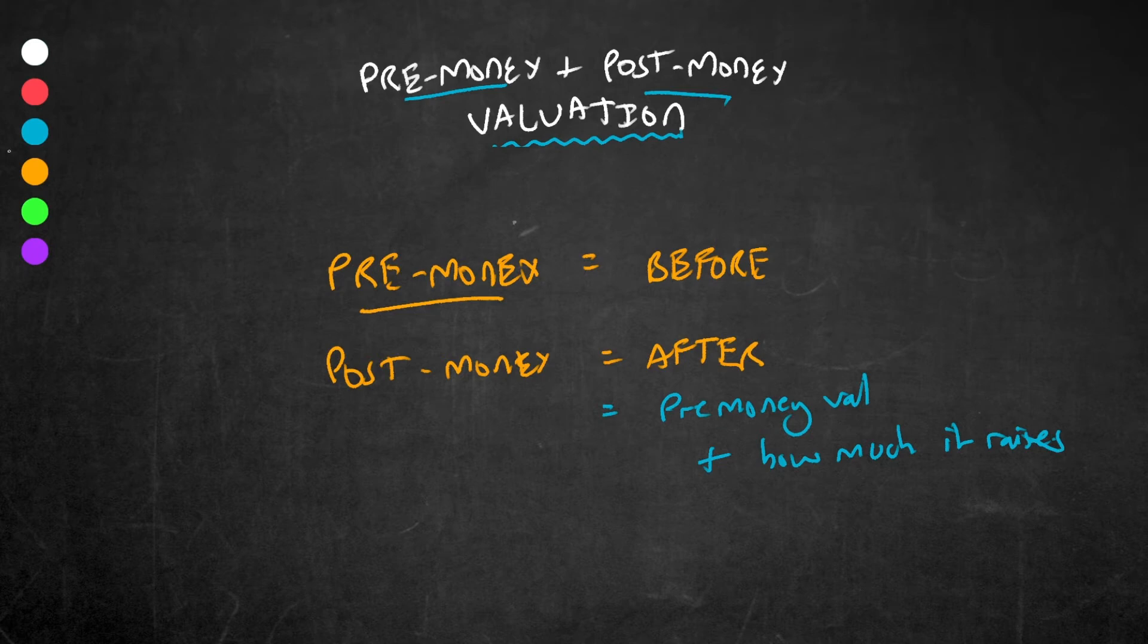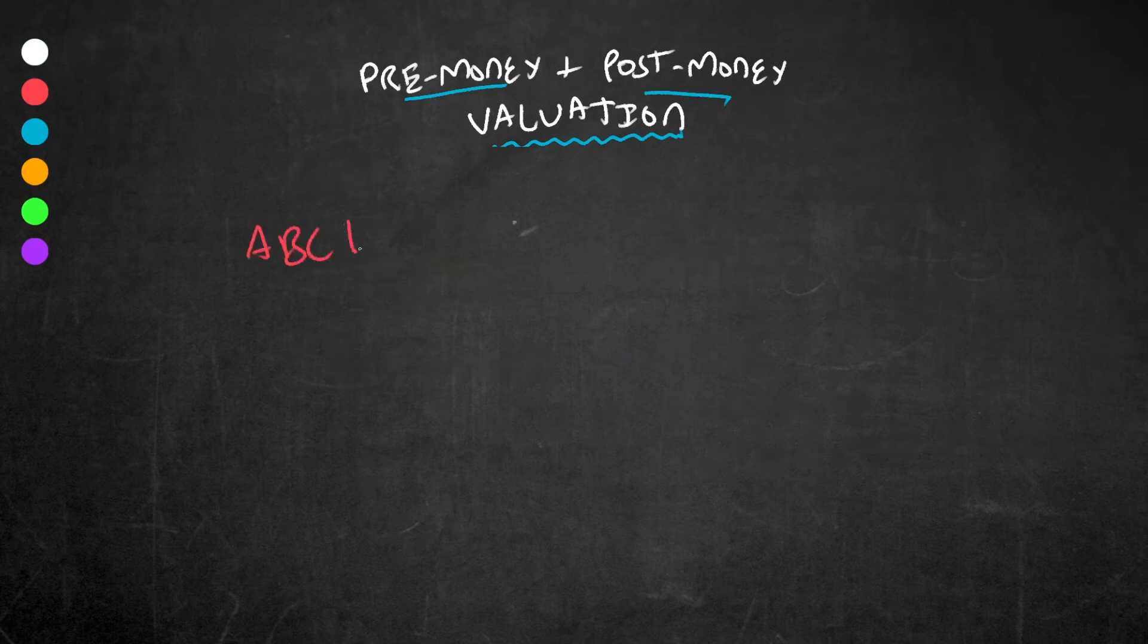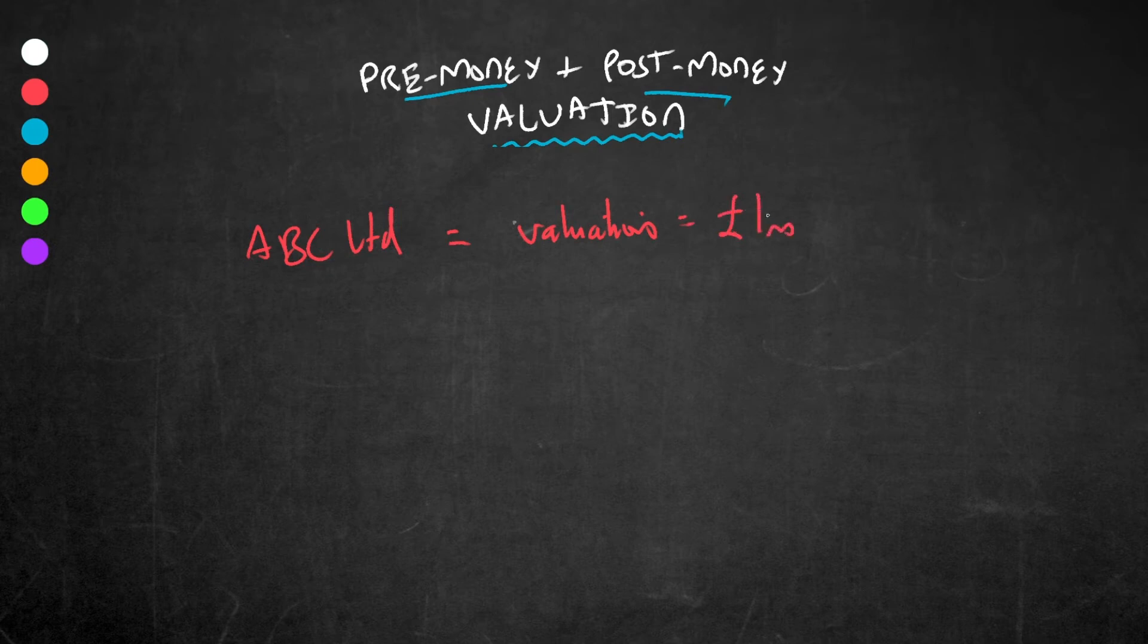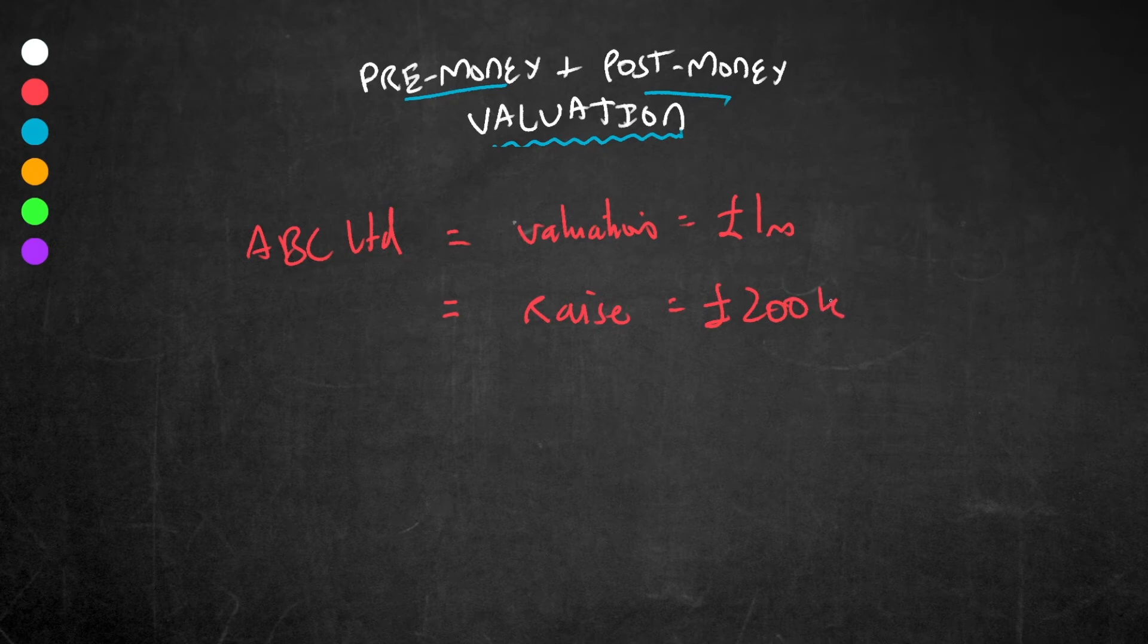So let's look at a fictitious example. ABC Limited is a private company, and today it is independently valued at one million pounds. Now let's say it wants to raise 200,000 pounds of capital in order to boost its business. It finds an investor who's willing to put this money in. Its pre-money valuation, as we just said, was one million pounds. It raises 200,000 pounds.